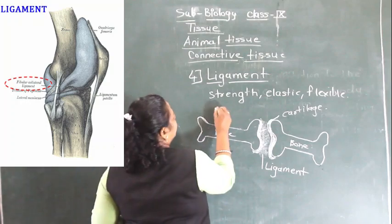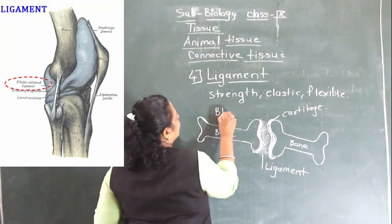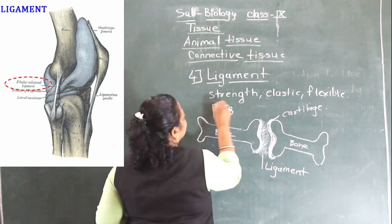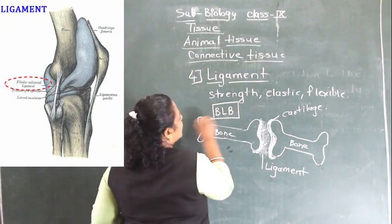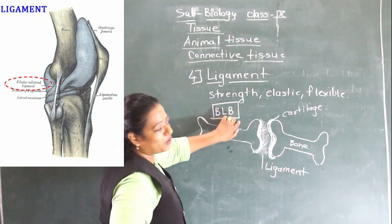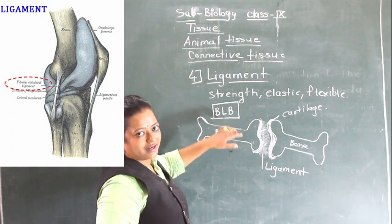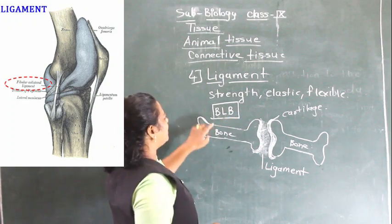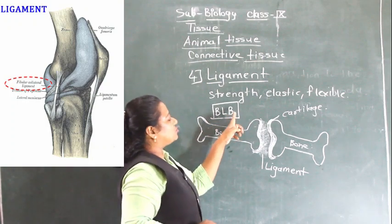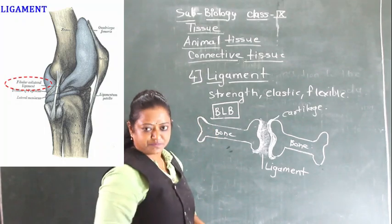We can keep in mind the short form BLB — Bone, Ligament, Bone. BLB means bone joined to other bone with the ligament.